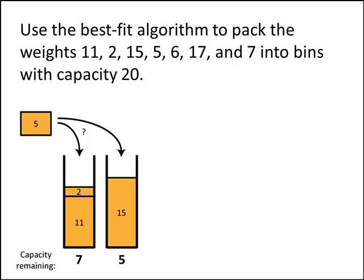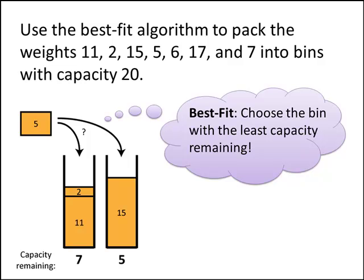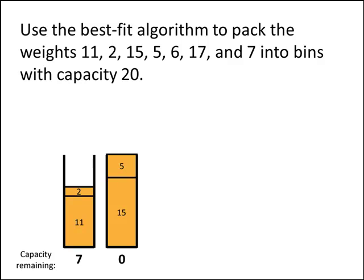Weight 5 could go into the first bin or the second bin. The rule for the best fit algorithm is: choose the bin with the least capacity remaining of all bins that could hold our weight. In this case, we put the weight 5 into the second bin. Notice that the second bin is now completely full — it has no capacity remaining. That's the best possible scenario. If we're trying to pack weights efficiently, we want as many perfect fits as possible, and the best fit algorithm tries to find those good fits.